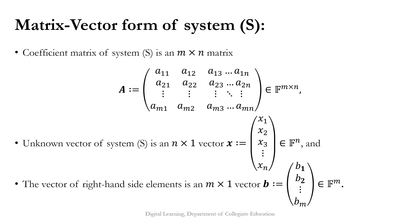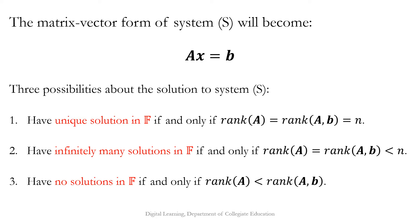To find the conditions that characterize the existence of a solution to the non-homogeneous system, we convert the system S into matrix-vector form. We denote the coefficient matrix of S as A, an m×n matrix with entries aᵢⱼ. The unknown vector x is an n×1 vector with entries x₁ through xₙ, and the right-hand side vector b is an m×1 vector with entries b₁ through bₘ. With this, the matrix-vector form of the system S becomes Ax = b.